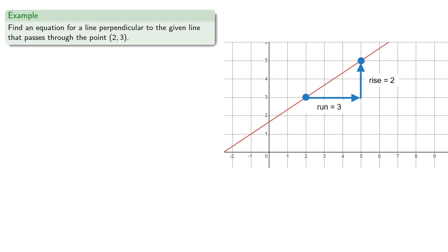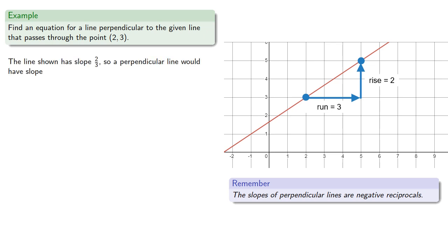Or we could even find the equation for a line perpendicular. Remember, the slopes of perpendicular lines are negative reciprocals. The line shown has slope two-thirds, so a perpendicular line would have slope negative one divided by two-thirds, which would be negative three-halves. And so an equation for the line passing through (2, 3) with slope negative three-halves is y = (-3/2)(x - 2) + 3.